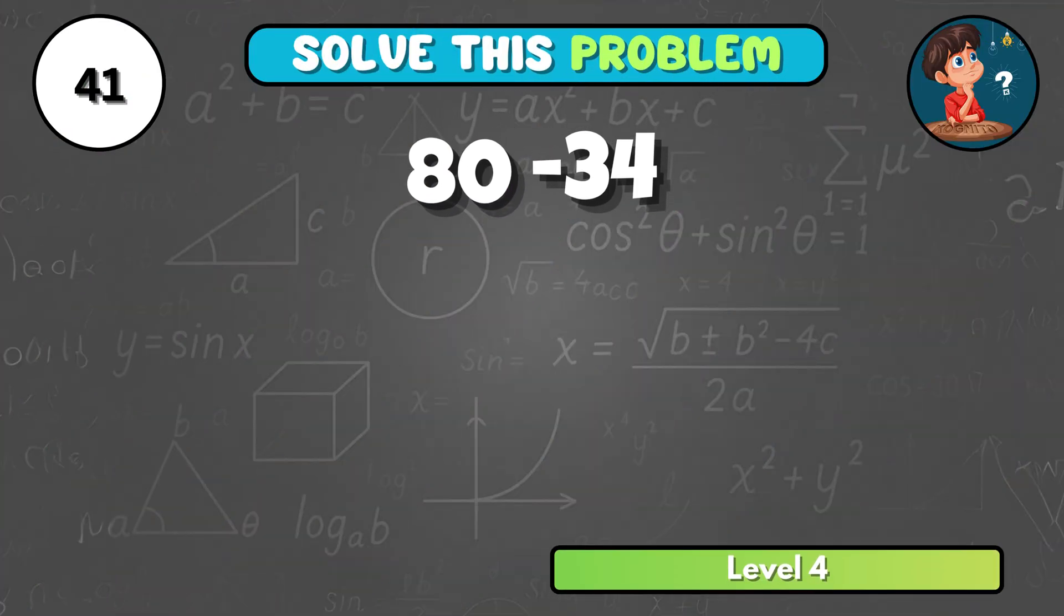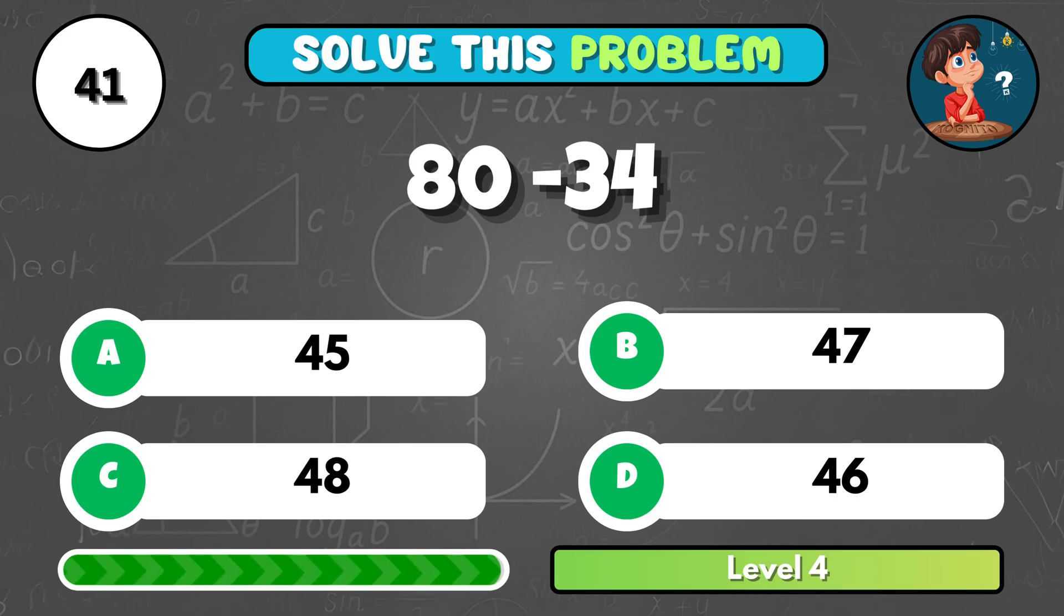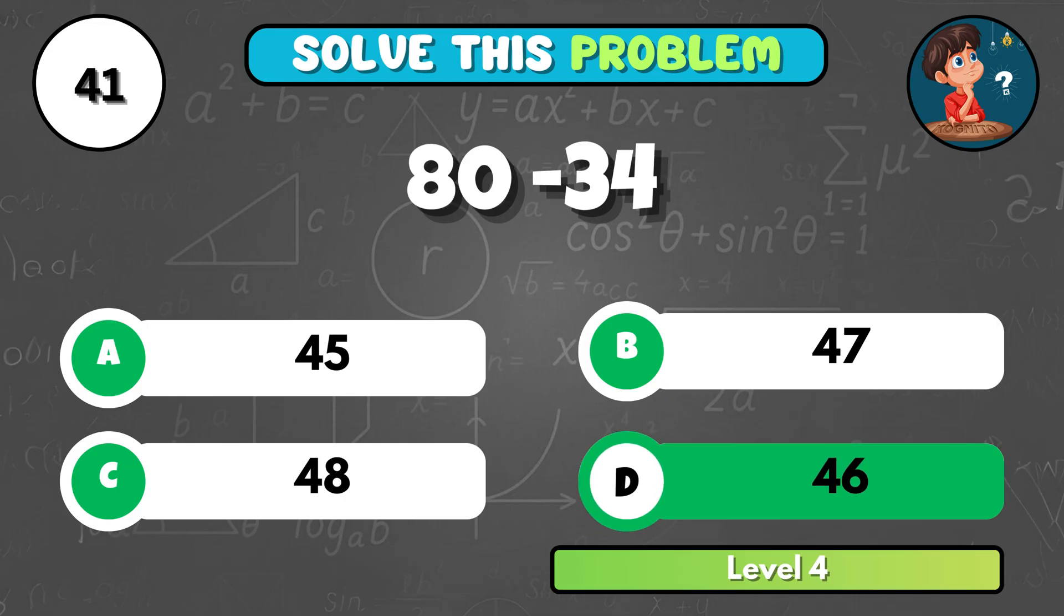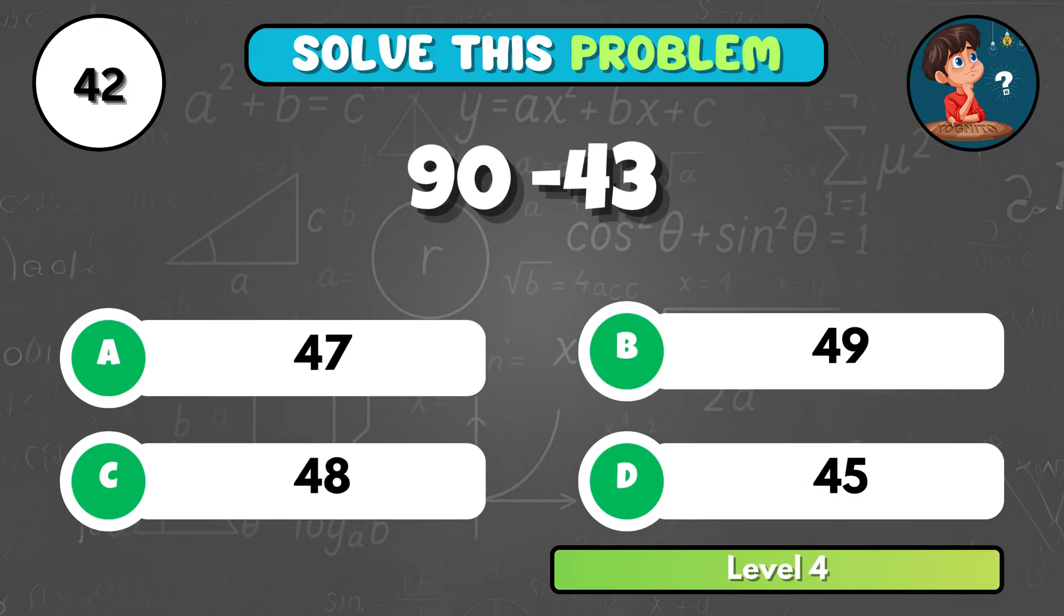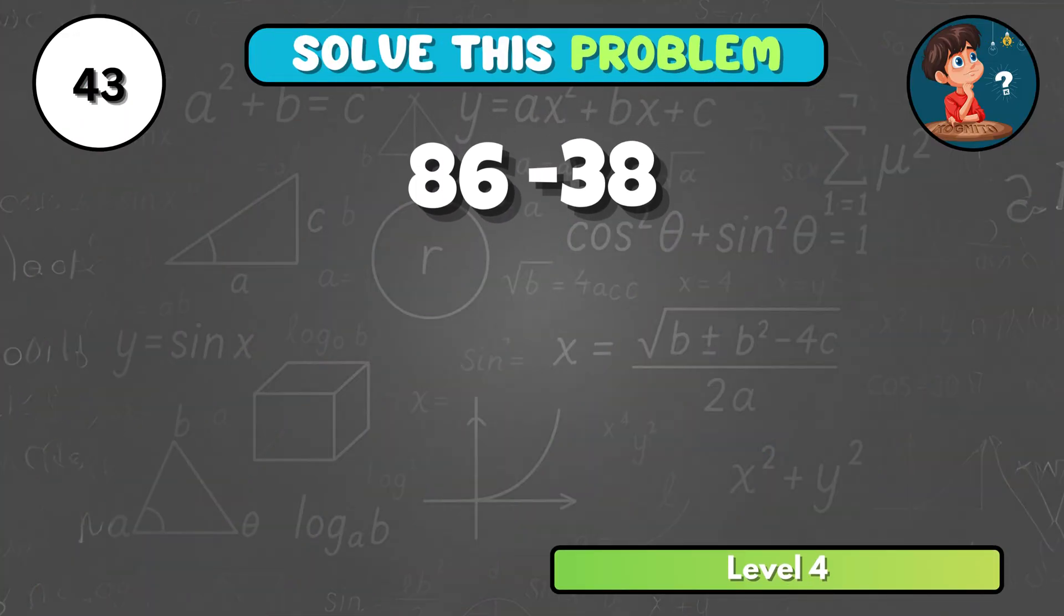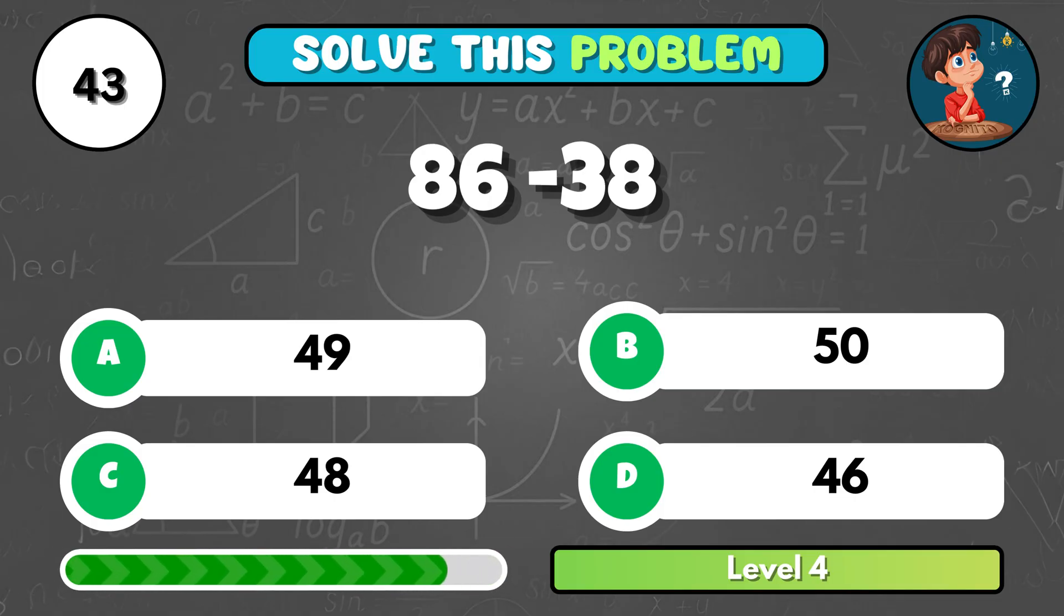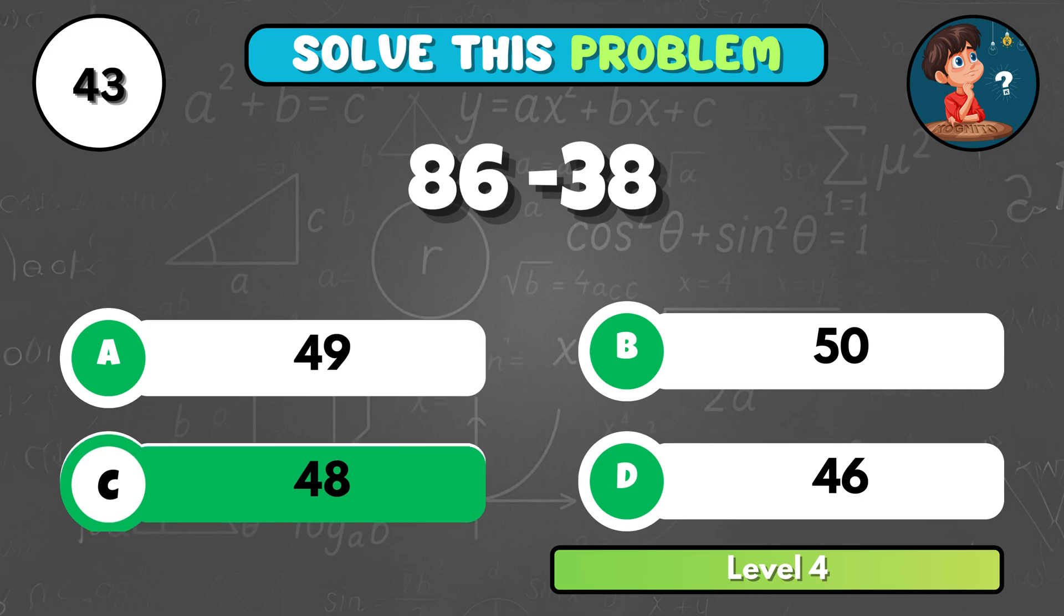We're in challenge mode now! What's 80 minus 34? That's D, 46! Can you handle this one? 90 minus 43 equals what? It's A, 47! Big numbers ahead! 86 minus 38 is what? That's C, 48!